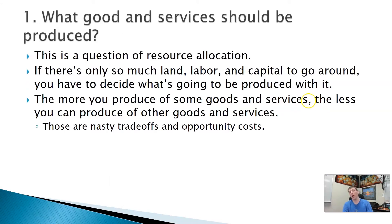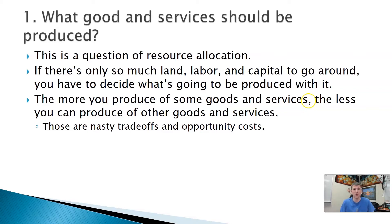That first question — what goods and services should be produced — is about resource allocation. What are we going to use our resources for? If we use our resources to make one thing, we can't use them to make something else. Let's say I've got a ton of steel and I use it to make a tank — now I can't use that steel to make a car or washing machines. The steel is being committed. Same with labor: if people are in a factory producing washing machines, they can't be in a different factory producing a car. Labor is finite, so we have to decide how it is allocated.